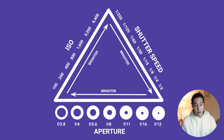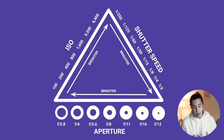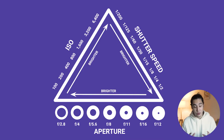The exposure triangle is made up of three main components: ISO, shutter speed, and aperture. As you can see in this triangle diagram right now — if these just sound like numbers to you and you don't know what they mean, do not worry. That is why I'm here. We're going to go through these together.